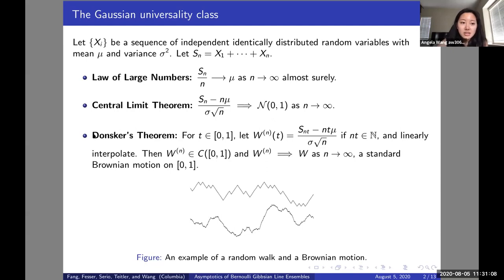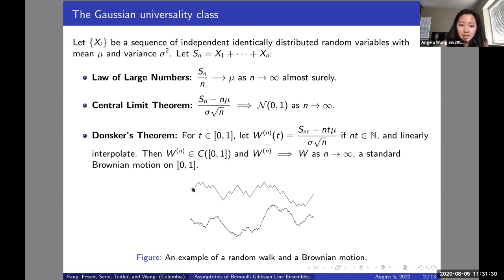Lastly, Donsker's theorem says that if you define this new function-like random variable W_n(t) with rescaled S_n and interpolating them into a function, then W_n will also converge in distribution to a standard Brownian motion, as shown in the picture. And as the steps are smaller, the random walk will become a Brownian motion.